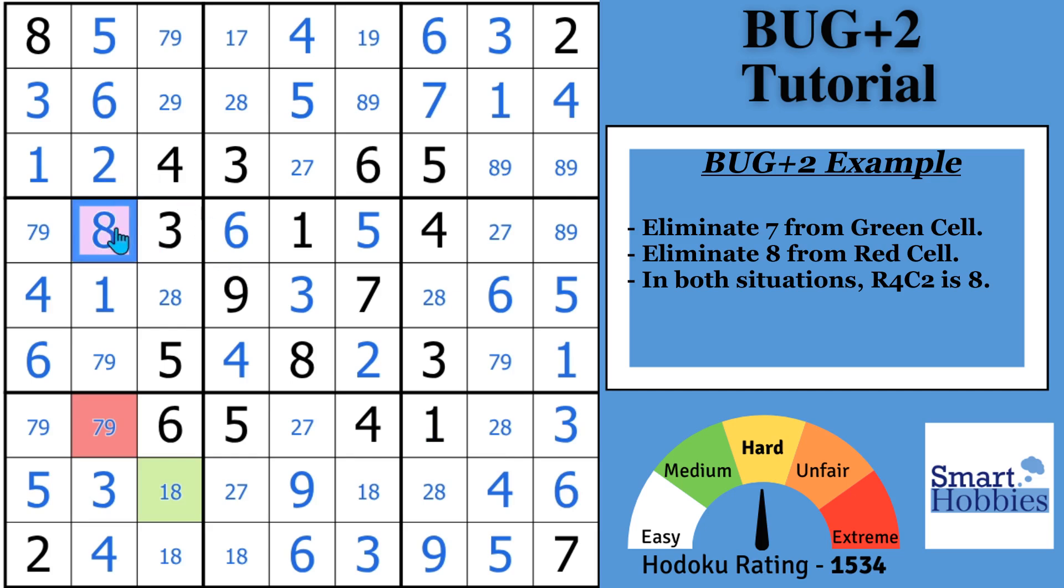And then, if we go back to here, and you notice that this is a one-eight naked pair now, that would force a two right here and an eight right there. Hopefully you notice that in both situations, this cell has to be an eight.